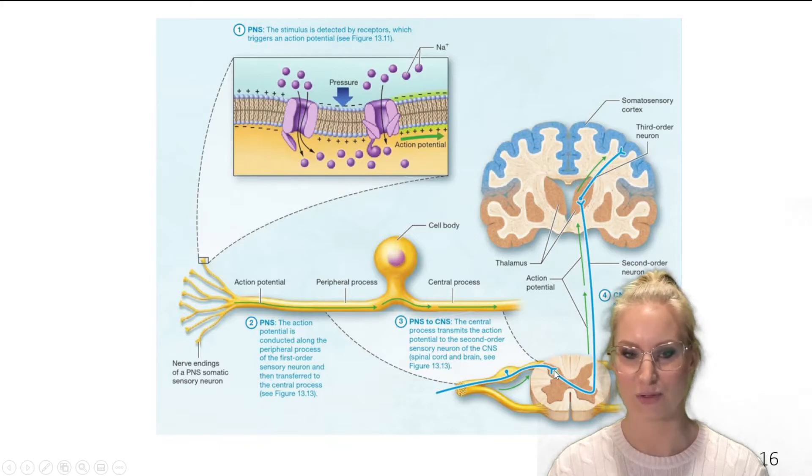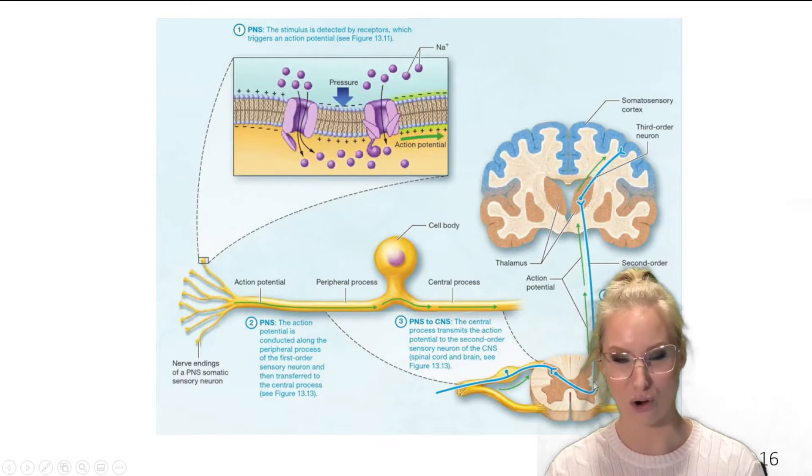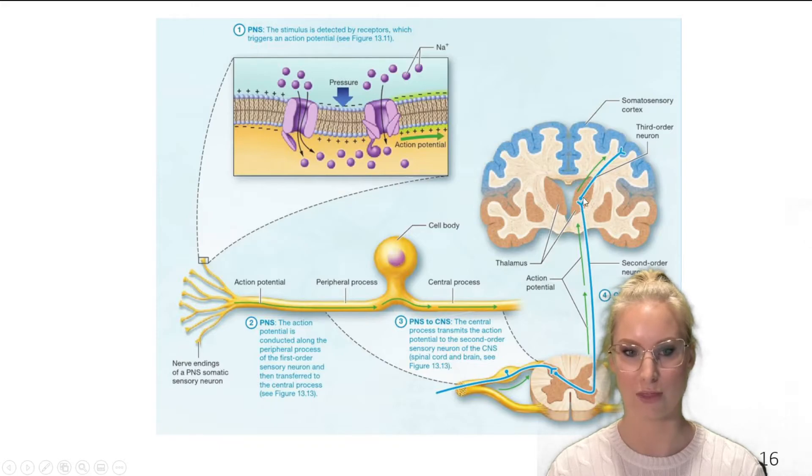And as you can see, that secondary neuron actually crosses over to the opposite side of the spinal cord and then travels up here through to the thalamus. So that second order neuron is sending that signal up the spinal cord to the brain, specifically the thalamus in most cases.